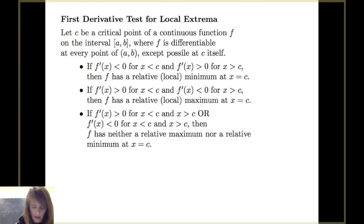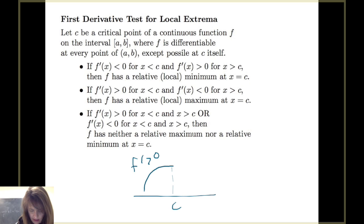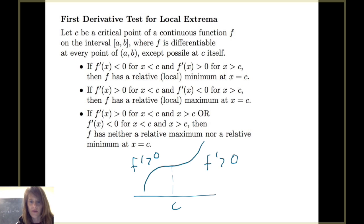There is a third scenario: if the first derivative is positive both before and after c, or negative both before and after c, then we have neither a relative maximum nor a relative minimum. For example, the function might be increasing, flatten out with a horizontal tangent at c, then increase again — with f prime positive both before and after c. The same applies if f prime is negative on both sides. In this case, c is still a critical point, but there is no local extremum.